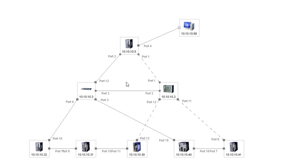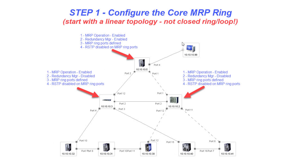This is a system that had been previously set up, so you'll have to excuse me for just using a single switch to demonstrate the various settings. First thing we're going to do is start off with the configuration of the MRP core ring, and we're going to select one switch to be our MRP ring manager. We will have broken or disconnected one of the ports here to prevent a loop from happening.